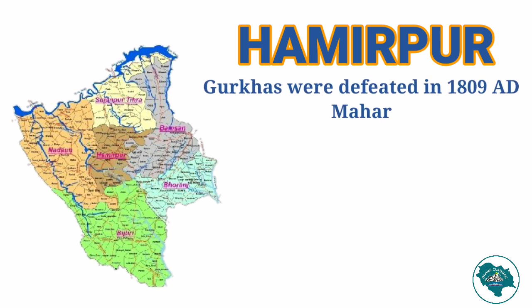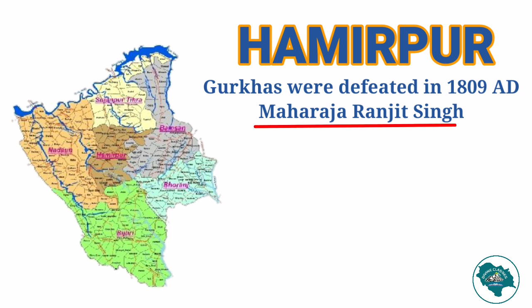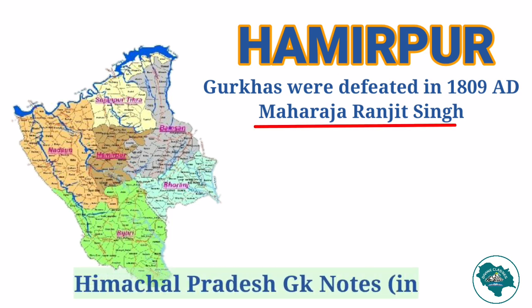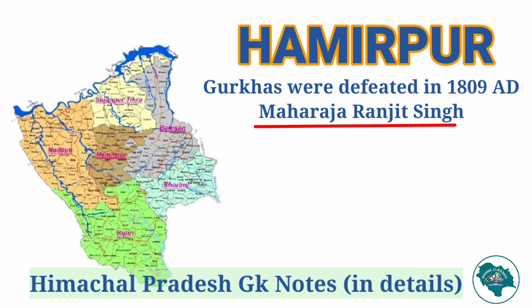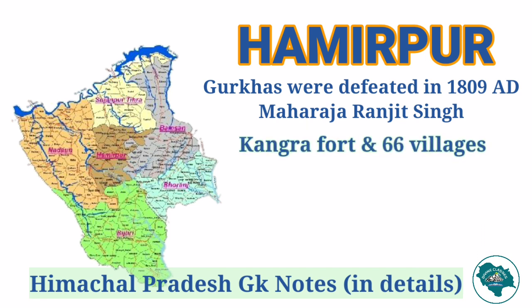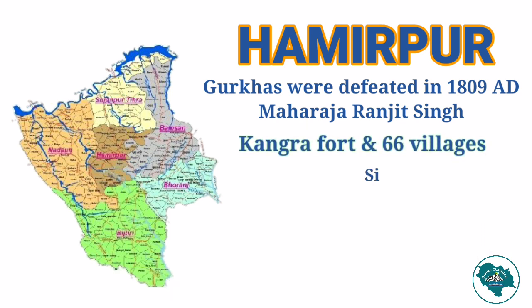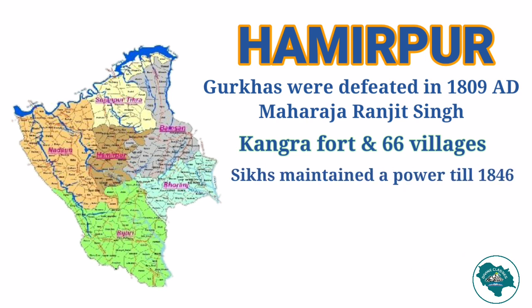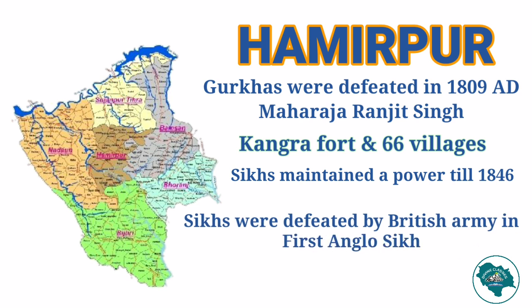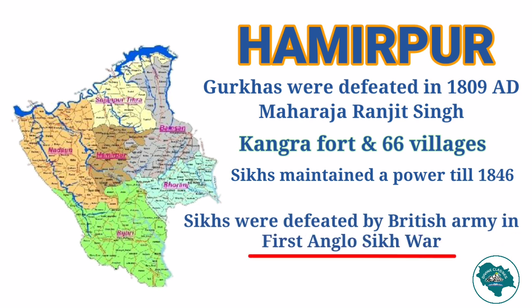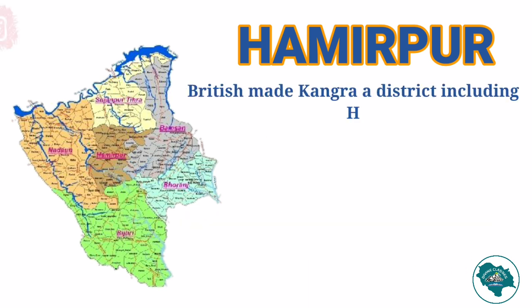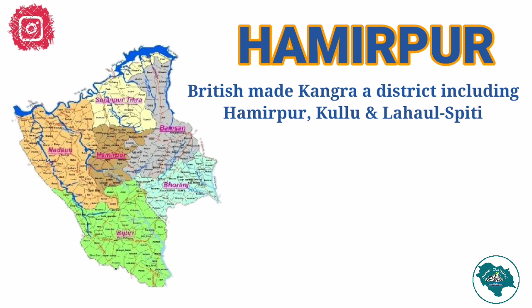The Gurkhas were defeated in 1809 AD by Maharaja Ranjit Singh on the request of Sansar Chand. For this, Ranjit Singh received Kangra fort and 66 villages. The Sikhs maintained power over Kangra and Hamirpur until 1846, when they were defeated by the British army in the first Anglo-Sikh war. The British made Kangra a district which included Hamirpur, Kullu, Lahaul, and Spiti.